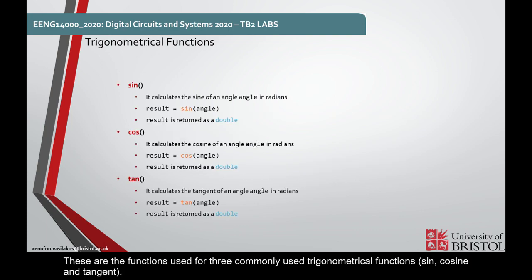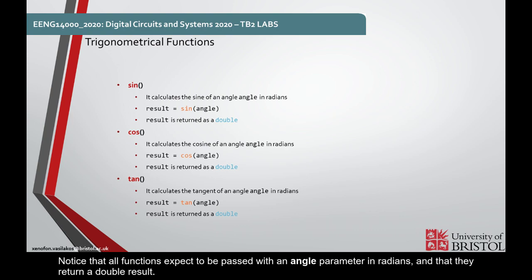These are the functions used for three commonly used trigonometrical functions: sine, cosine, and tangent. Notice that all functions expect to be passed with an angle parameter in radians, and that they return a double result.